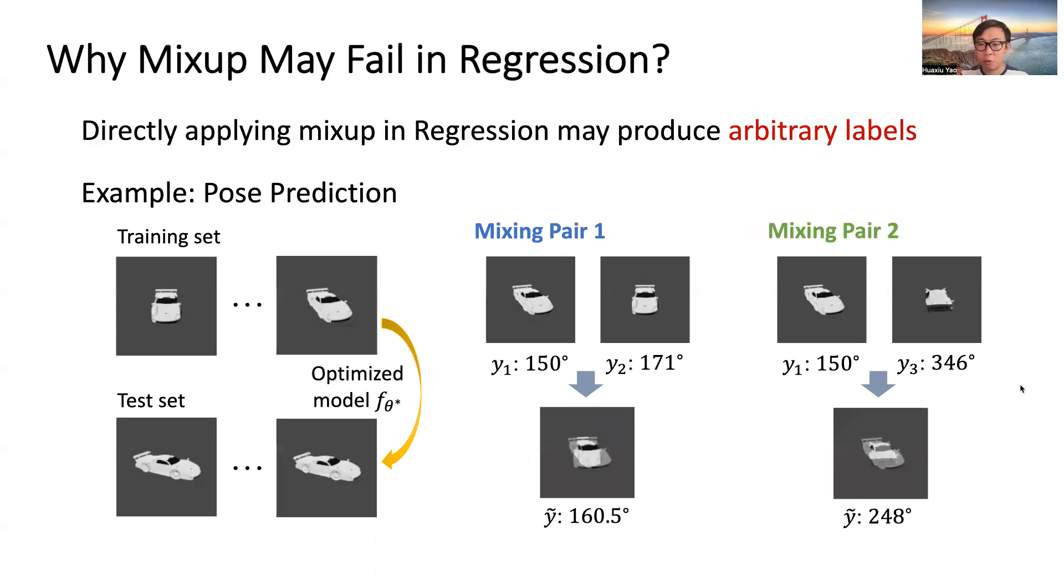In mixing pair 2, we produce examples with label 248 by mixing examples with labels 150 again and 346. Obviously, mixing pair 1 generates reasonable mixed examples while pair 2 produces arbitrary labels.